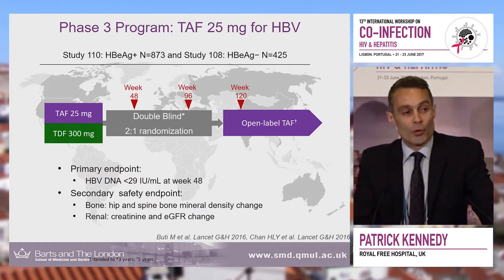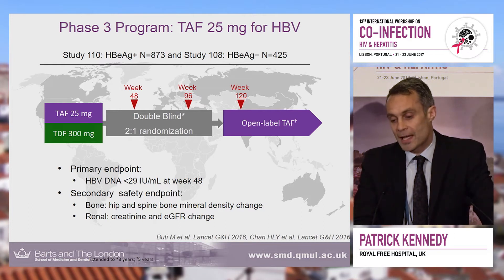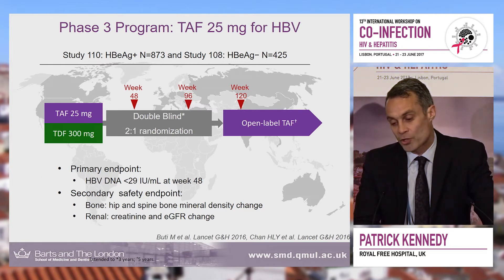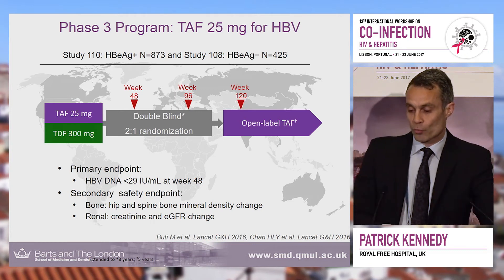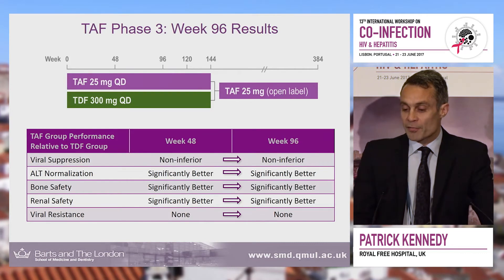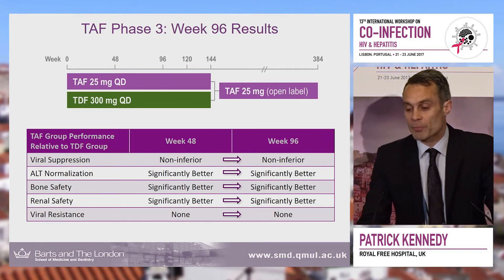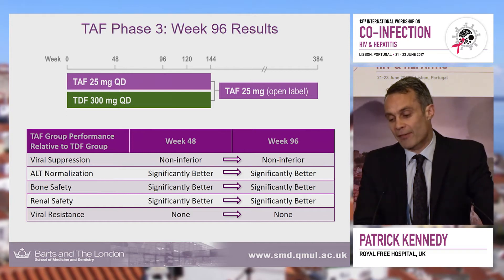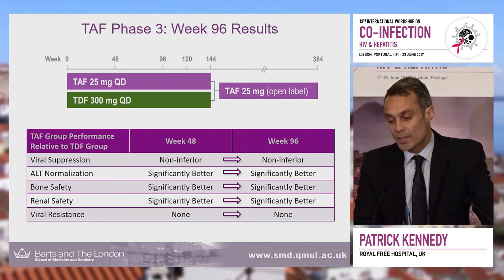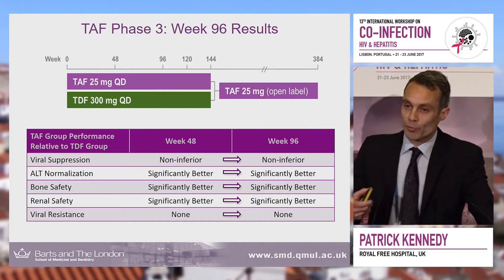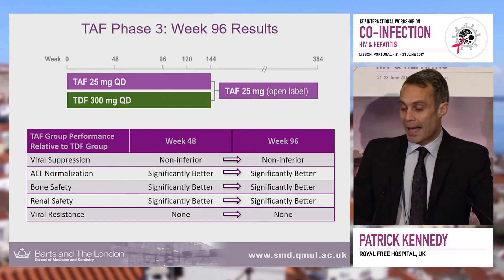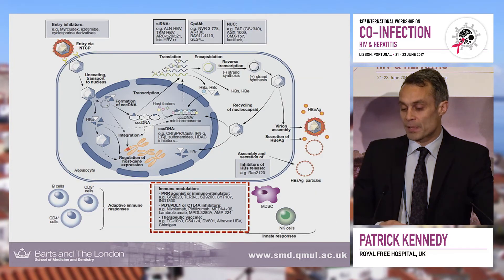Starting with NUCs — we know the recent data from the TAF studies: Study 110 looking at e-antigen positive patients, and Study 108 looking at e-antigen negative patients. The primary endpoint is HBV DNA suppression to less than 29 international units, with secondary safety endpoints looking at bone and renal parameters. With week 96 data and beyond, we can see that viral suppression with TAF versus tenofovir is non-inferior, and for ALT normalization, bone and renal safety, TAF performs significantly better. TAF will likely form the backbone of treatment going forward, used in combination with new therapies.